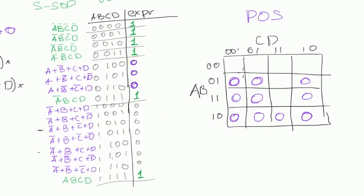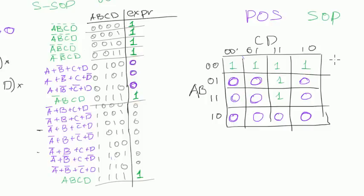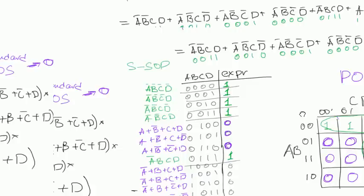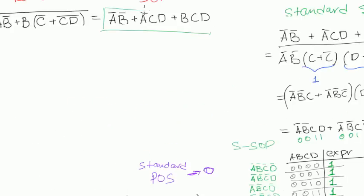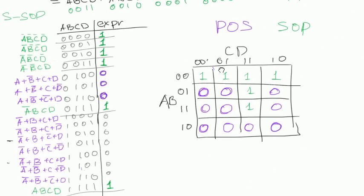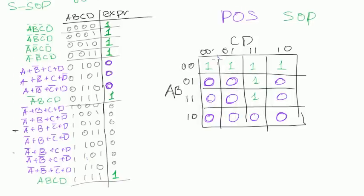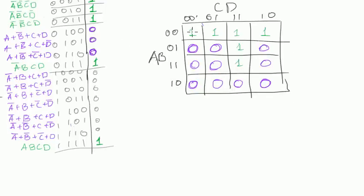If you want an expression to simplify using sum of products form, then we would group the ones. But now what we care about are zeros, and we want to get the most simple expression for product of sums. That means we will group not ones but zeros — the idea and the rules for grouping are exactly the same.